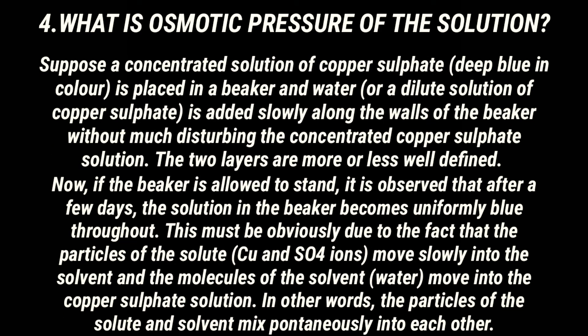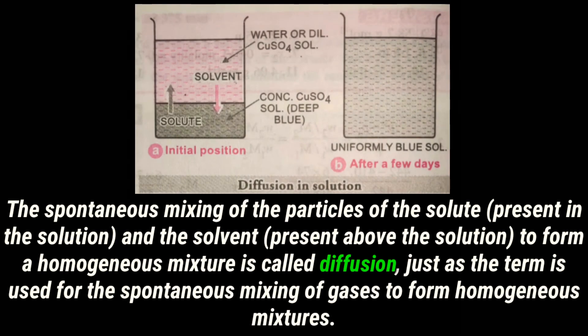What is osmotic pressure of the solution? Suppose a concentrated solution of copper sulfate, deep blue in color, is placed in a beaker and water or a dilute solution of copper sulfate is added slowly along the walls without much disturbing the concentrated copper sulfate solution — the two layers are more or less well defined. After a few days, the solution becomes uniformly blue throughout, because the Cu²⁺ and SO₄²⁻ ions move into the solvent and water molecules move into the copper sulfate solution. This spontaneous mixing of solute and solvent particles to form a homogeneous mixture is called diffusion.